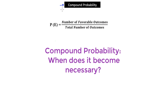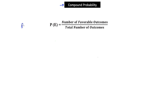The basic concept of calculating the probability of any event E, written as P(A), stays the same — it is the number of favorable outcomes over the total number of outcomes. The real challenge compound probability brings is determining whether those events are dependent or independent of each other.